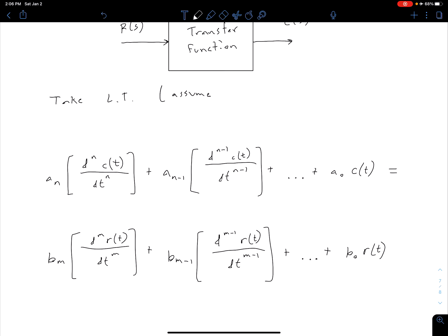we're going to assume all initial conditions are zero. What that's going to do is make those transforms where we have derivatives a lot easier. So all of our initial conditions are zero.